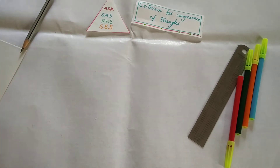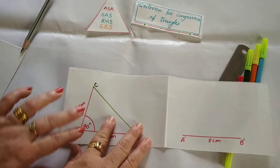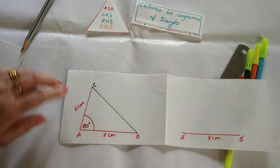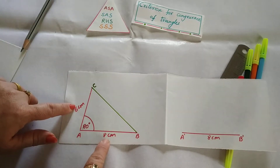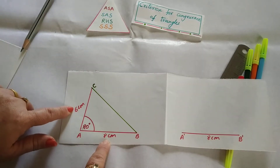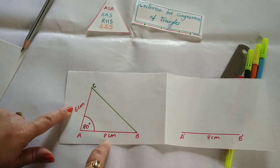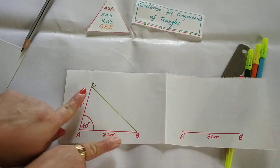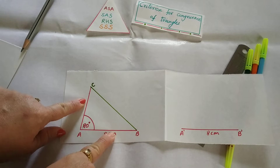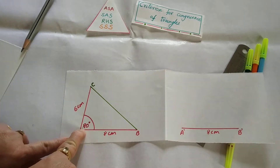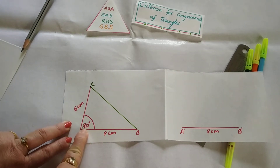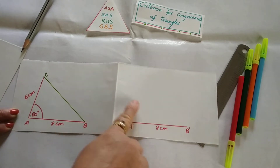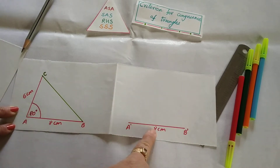Now we will go for SAS. This is another sheet and again the red color information is given — two sides, one is 6 centimeter and one is 8 centimeter. The included angle between these two sides is also given. The angle between the two sides is known as the included angle. Now the same way we will do construction on the right hand side — the baseline is already drawn.